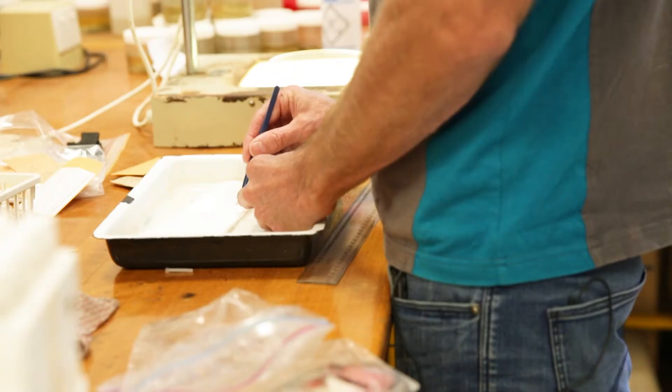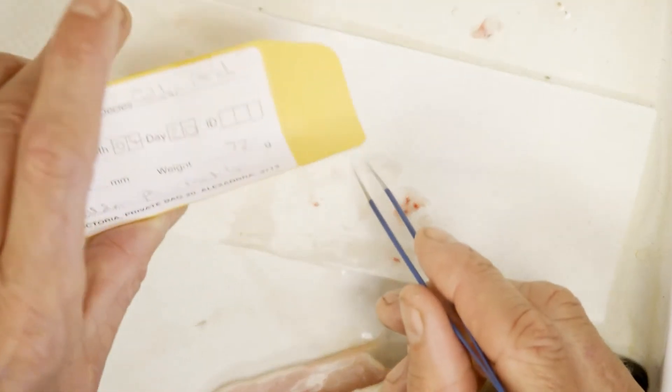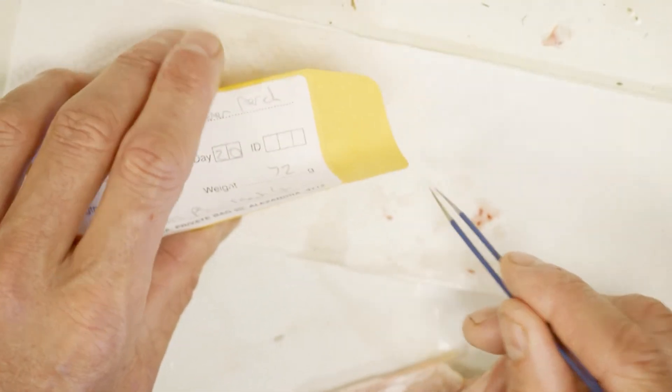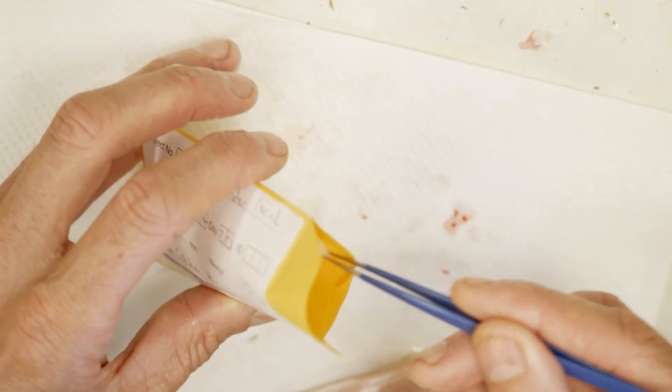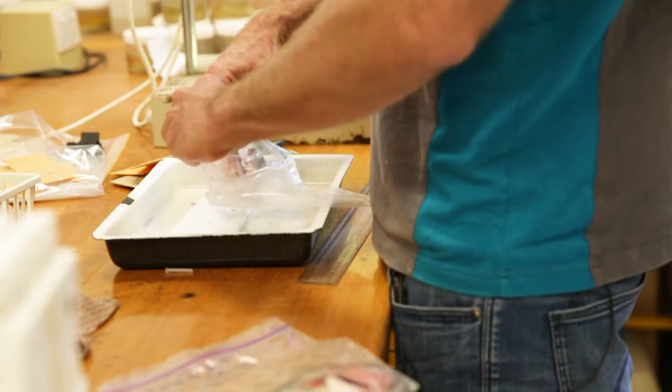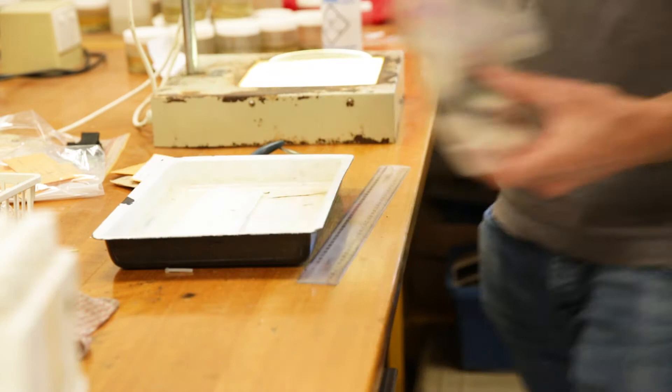Drop them onto a bit of paper towel and blot them dry. Once they're fairly dry we'll store them into paper envelopes, the front of which has the details of the size of the fish, the location and date of capture, and that's it.